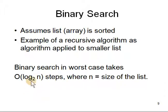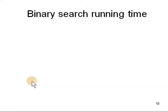In worst case it takes log n to the base 2 steps where n is the size of the list. And base 2 because you are using division by 2.